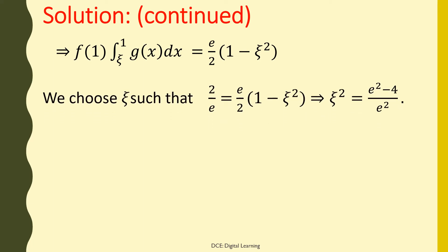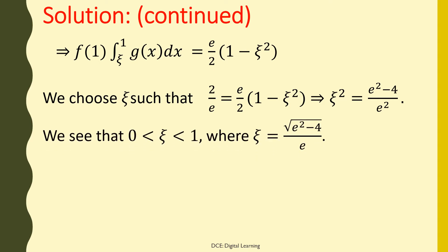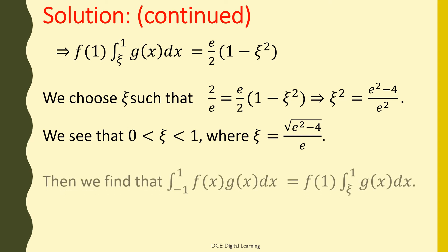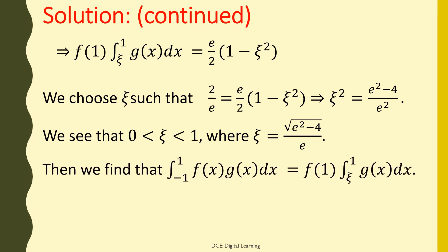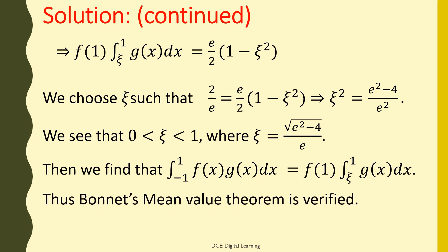We choose η such that 2/e = (e/2)(1 - η²), which implies η² = (e² - 4)/e². We see that η lies between 0 and 1, where η = √((e² - 4)/e). Then we find that the integral of f(x)g(x) dx from -1 to 1 equals f(1) times the integral of g(x) dx from η to 1. Thus Bonnett's mean value theorem is verified.